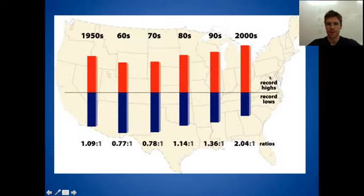We've seen this already in the instrumental record. This is the ratio of record daily high temperature set in the United States to daily low temperature set in the United States. We can see that in the 90s the ratio was 1.36 to 1, or there were 36% more record highs set than record lows. By the 2000s it was over 2 to 1, twice as many record highs set as record lows in the United States.